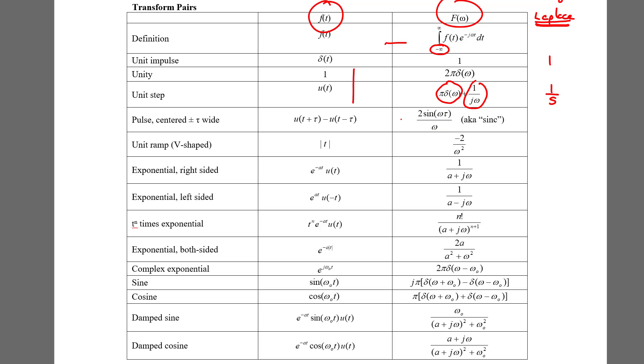What we talked about last class, this sinc function, this sine of a function of omega over omega. A unit ramp is new.